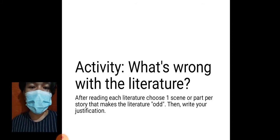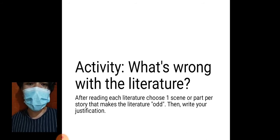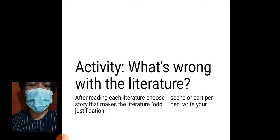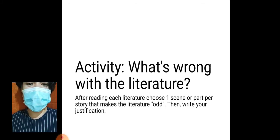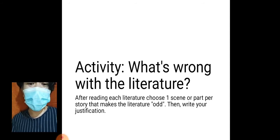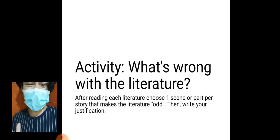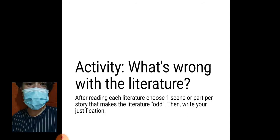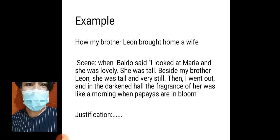We have two stories: 'How My Brother Leon Brought Home His Wife' and 'The Dead Stars.' After reading the two literatures, you need to choose only one scene per literature — the scene that makes you feel odd, meaning it is different. It's a scene that should perhaps be removed or changed to make the story better.